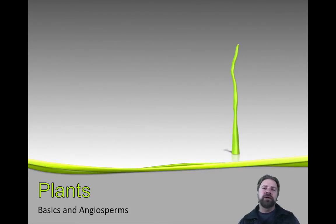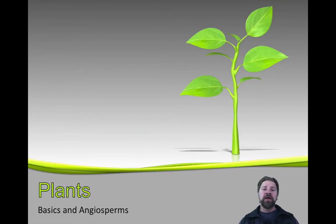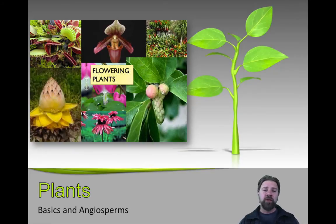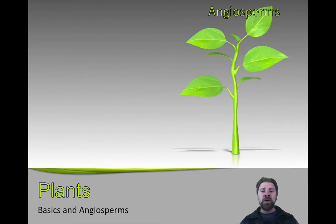Today we're going to take a look at plants. We'll cover the basics of the plant kingdom and start looking at a particular group called the angiosperms. We have a lot of experience with angiosperms, especially if you live in North America - if you look out the window or take a walk in the woods, typically what you're going to see the most of are angiosperms. They are the type of plant that has flowers, and today we're going to look at their mode of reproduction and why they have these beautiful unique flowers to attract pollinators.